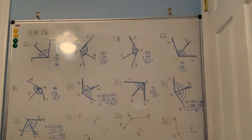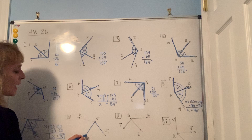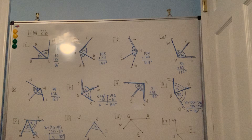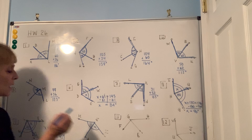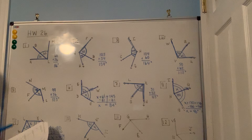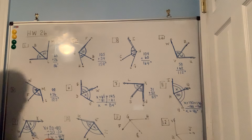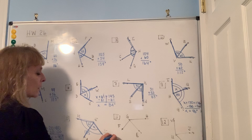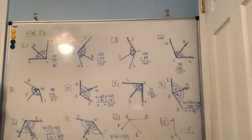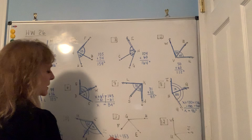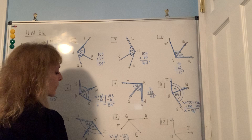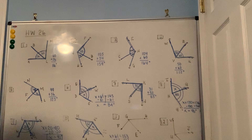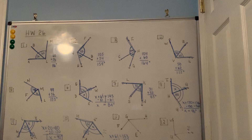Number ten: find angle IJA — a small angle, so I'll put X there. The other small angle AJK is 61 degrees. The big angle IJK is 153 degrees. Add the two smaller angles and set equal to 153. Subtracting 61 from both sides gives X equals 92 degrees. That's the answer for number ten.